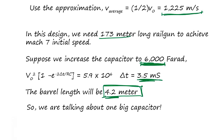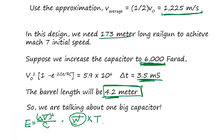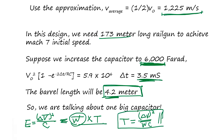Next we calculate the energy spent per shot. The energy is the voltage drop squared times the capacitor value. Given a charging equipment wattage W watts, the charging time T equals the energy divided by W. So T equals C times delta-V squared divided by W — that's your charging time per shot.